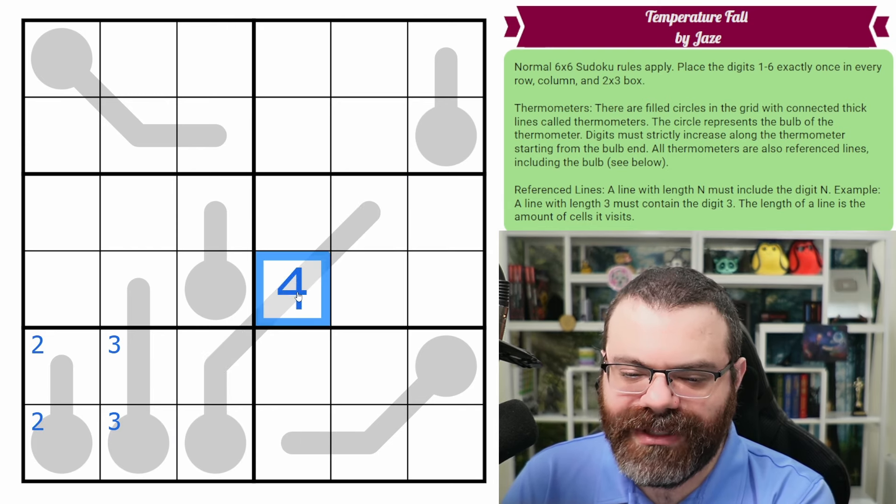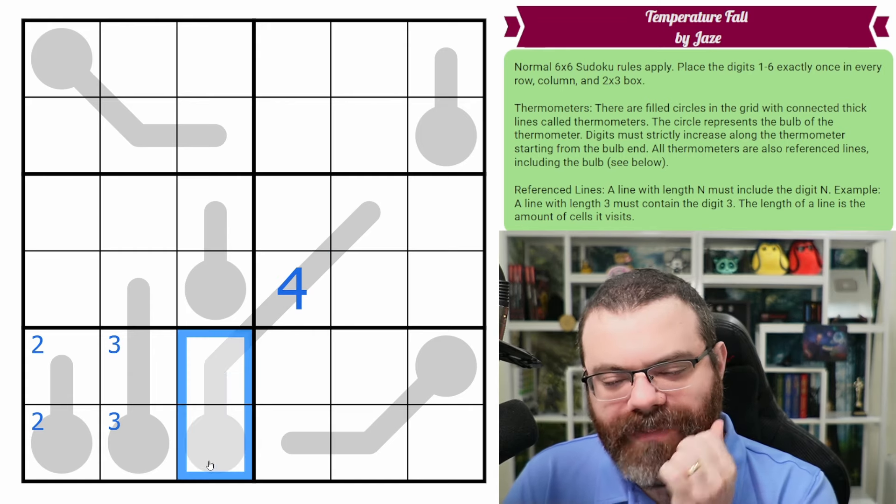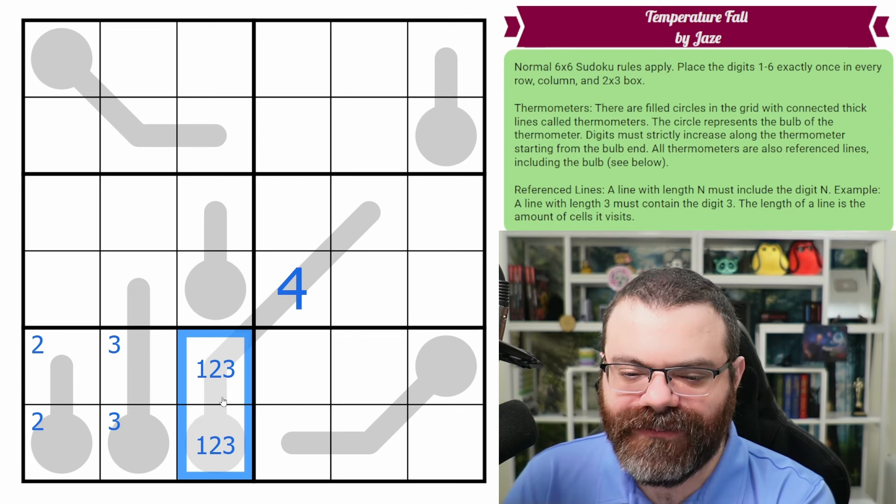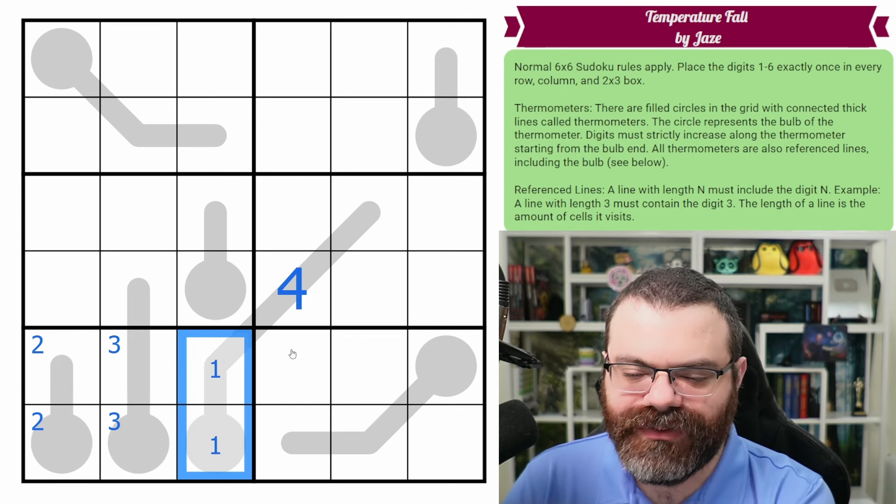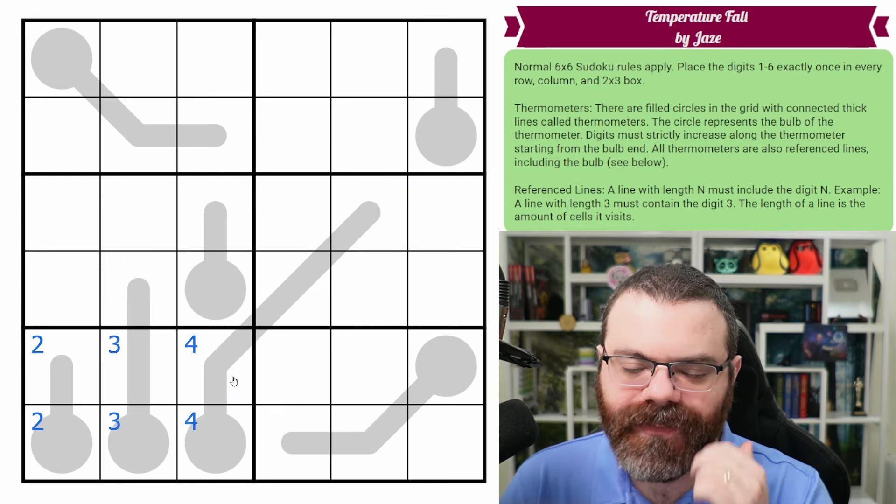But this also can't be the four because we don't have two digits. These would have to be from one, two, three, right? To be less than four. And we don't have two of those remaining. The two and three are over here. So these would both be one. So four is not up here, meaning that one of these is a four. That's pretty neat.